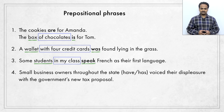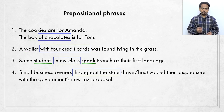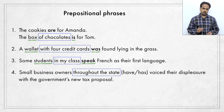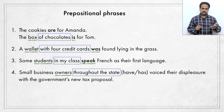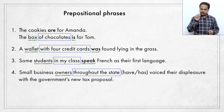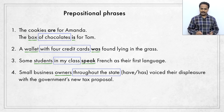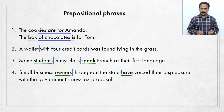So now you decide have or has. What's the subject here? Do you see a prepositional phrase? Yes, throughout the state is a prepositional phrase because throughout is a preposition. It gives you information about small business owners. This is the subject. Within this subject, the noun is owners, because the word business just tells you what type of owner. So the real subject is the word owners, which is a plural noun. So we need a plural verb without S. Small business owners throughout the state have voiced their displeasure with the government's new tax proposal.